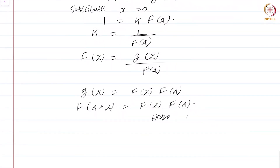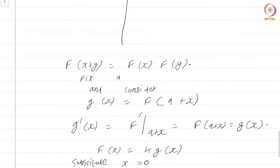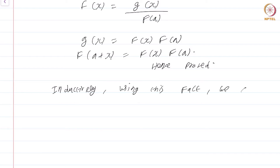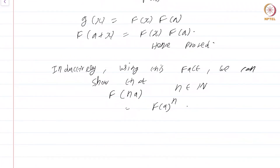Hence we have proved that f(x+y) = f(x)·f(y), with y fixed as a. Inductively, using this fact, we can show that f(n·a) = f(a)ⁿ for n in the natural numbers. This is true for n = 1; for n = 2, f(a+a) = f(a)², and inductively it is easy to show the general case.